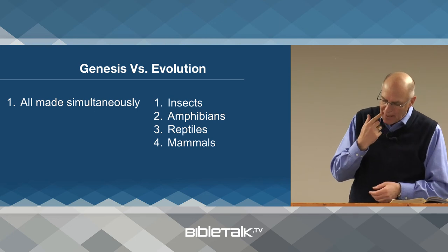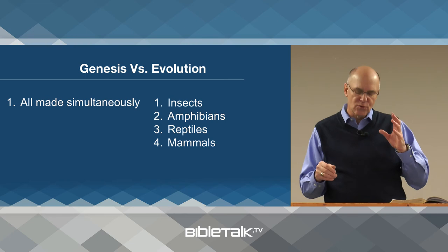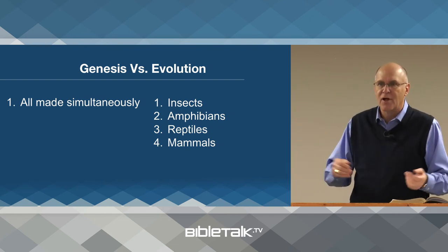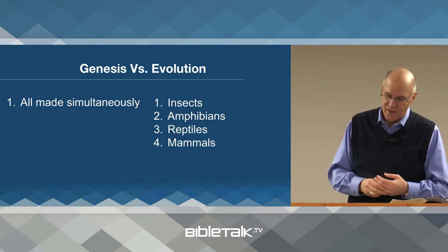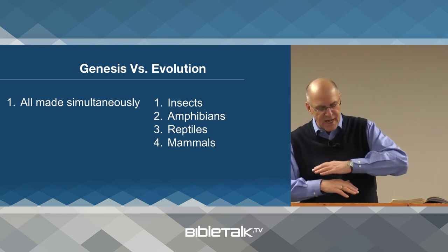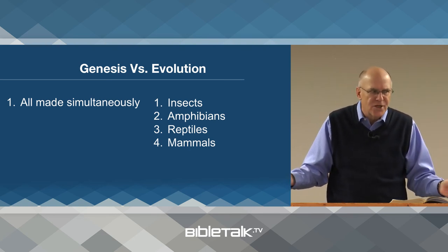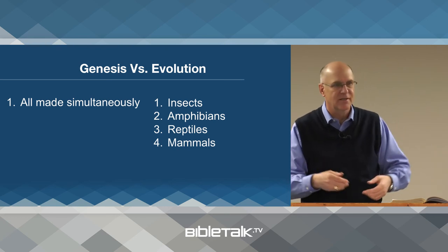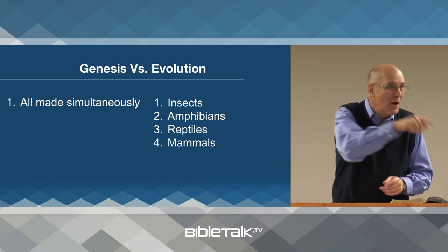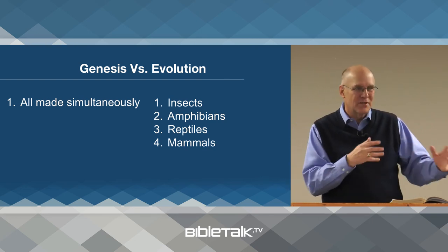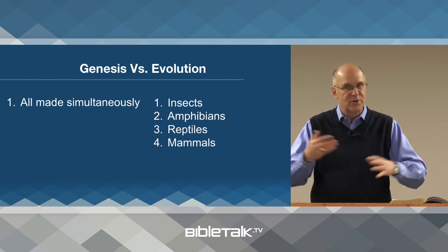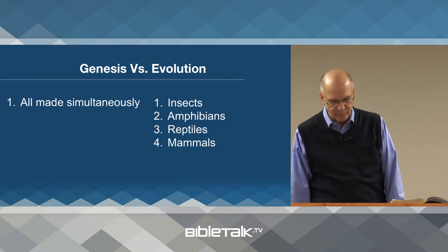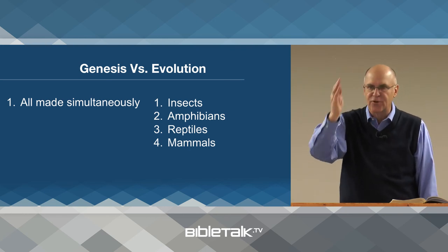Another point: in Genesis, there's no survival of the fittest going on. That concept is not a biblical concept; it's a human, evolutionary concept. God sees that what He has made is good. There is no competition for existence in the pre-sin world. In the pre-sin world, God gives to man all the vegetation to eat — man doesn't eat the animals, and the animals don't eat each other. There isn't this competition for survival; there's harmony, not just between man and man, but between the animals. The creation is balanced, and all creatures naturally fit into the environment created for them.